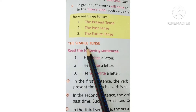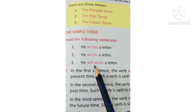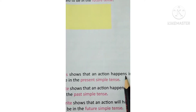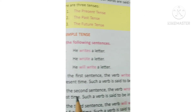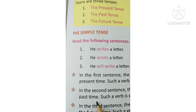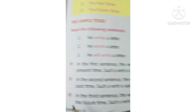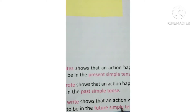Now look at this: The simple tense. Read the following sentences: He writes a letter. He wrote a letter. He will write a letter. In the first sentence, the verb 'writes' shows that an action happens in the present time — such a verb is said to be in the present simple tense. In the second sentence, the verb 'wrote' shows that an action happened in the past time — such a verb is said to be in the past simple tense. In the third sentence, the verb 'will write' shows that an action will happen in the future time — such a verb is said to be in the future simple tense.